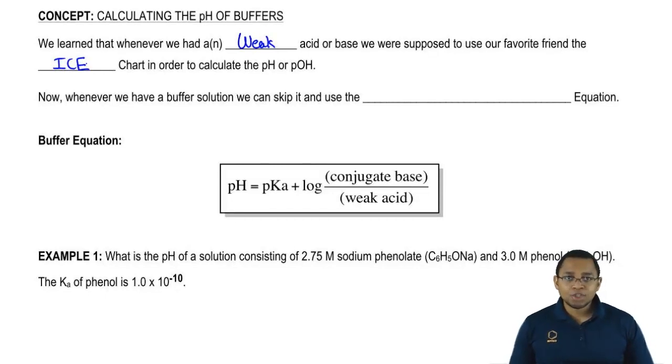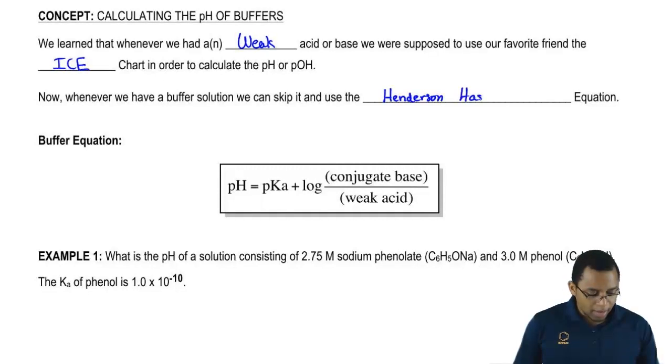Anytime we know we have a buffer for sure, we can skip the ICE chart altogether and just use our Henderson-Hasselbalch equation.